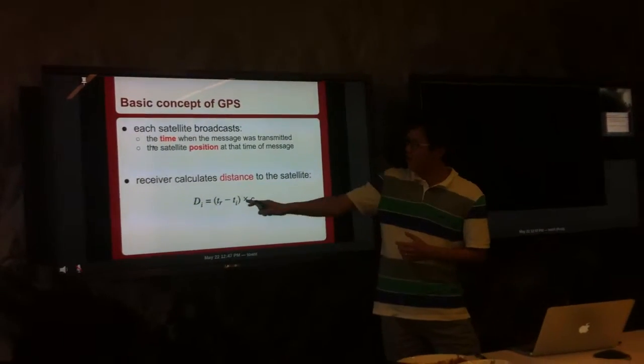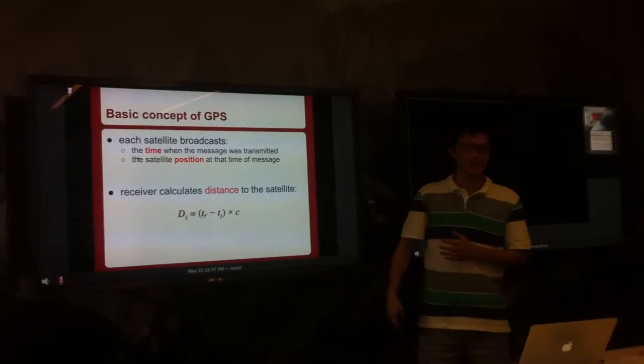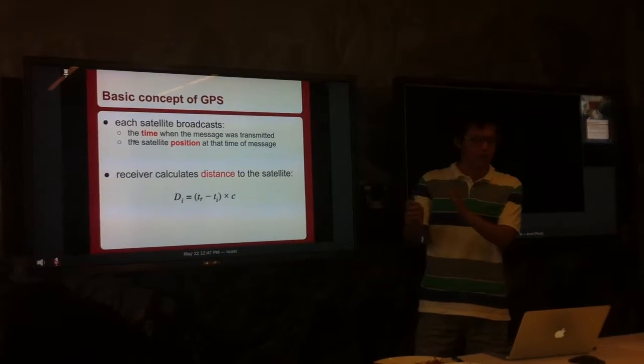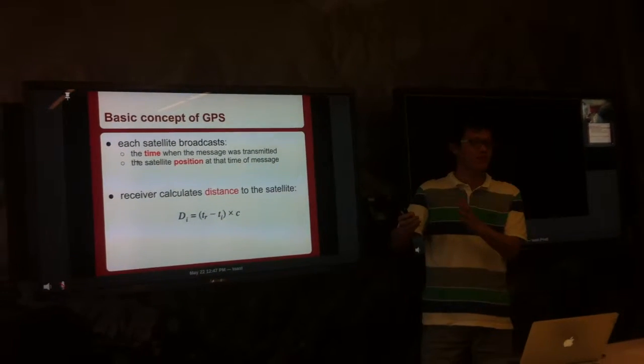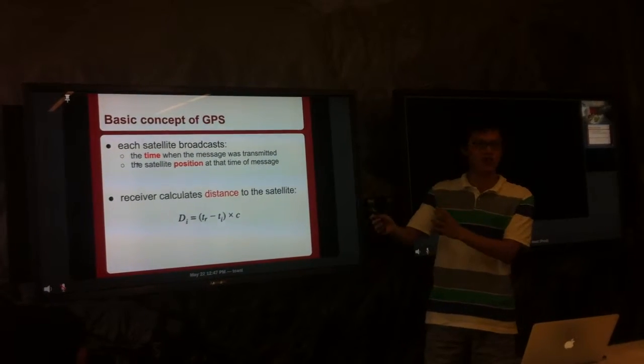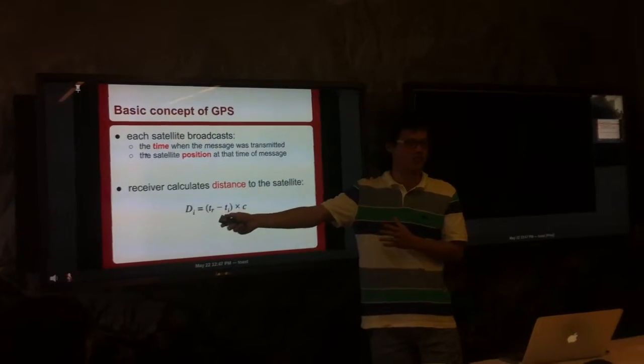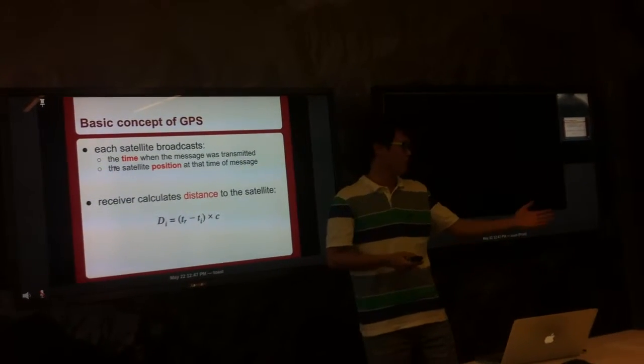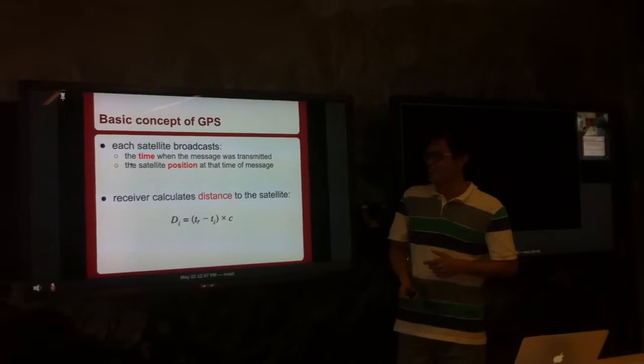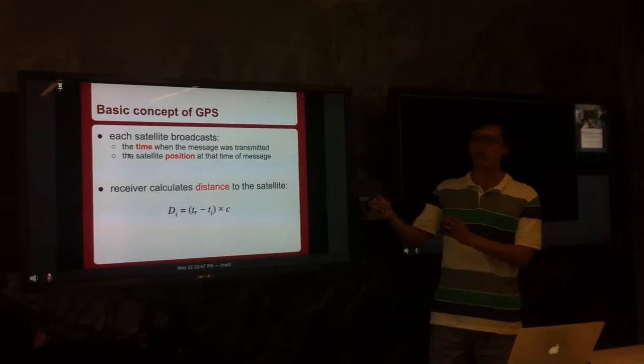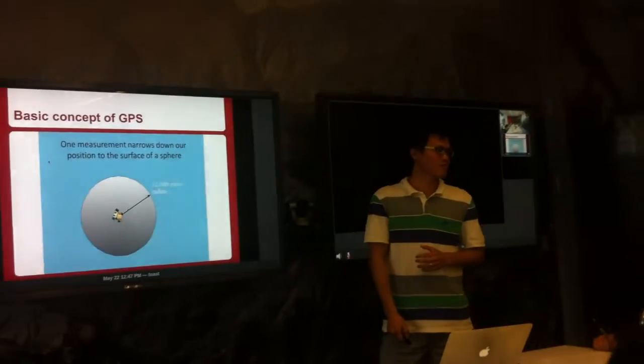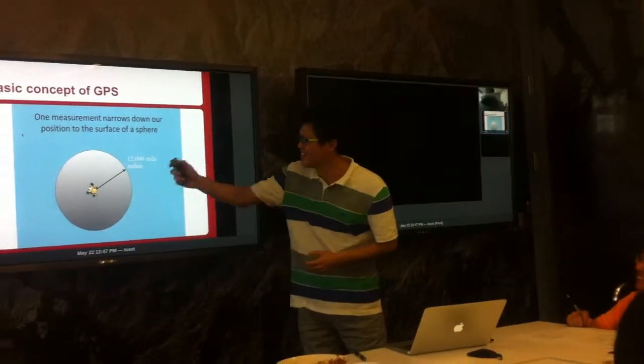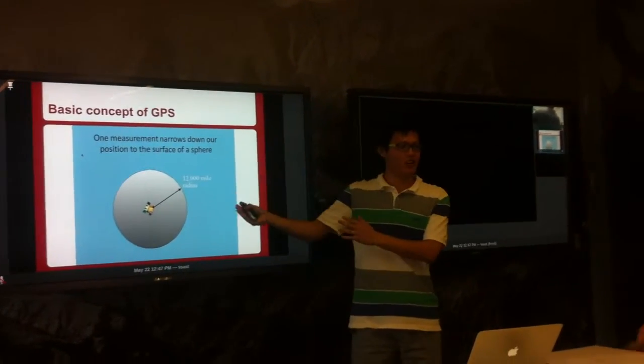What next? The receiver will calculate the distance to the satellite using this message. How can it do that? Because if we know what time the message was sent and what time we received the message, then we can know how long the message traveled through space. And the message travels at the speed of light, so we can know the distance. So when I tell you my location and what time it is, you can know how far away you are from me. Do you need to take relativity into account because the satellite is traveling? Good question. I'll talk about that later.